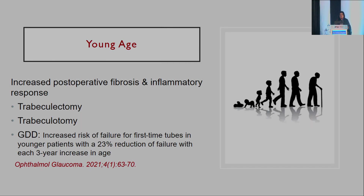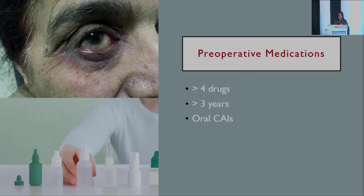Looking at age, we all know young patients mount a profuse inflammatory reaction, so there is an increased likelihood of postoperative fibrosis and inflammatory response — not just in trabeculectomy but also in congenital glaucomas and GDD. There is an increased risk of failure for first-time tubes in younger patients, with almost a one-third reduction in failure risk with each three-year increase in age.